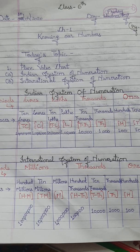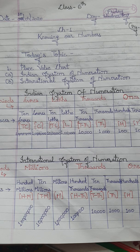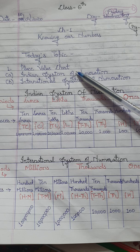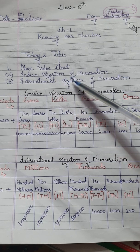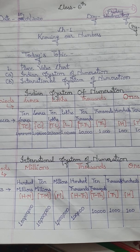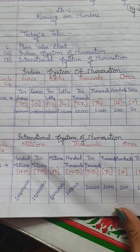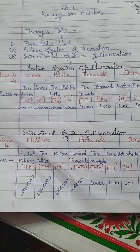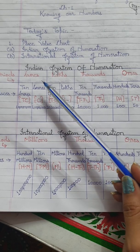Good morning students. Welcome to your maths class. Today I am teaching you about the very first chapter of the class 6th book, that is Chapter 1: Knowing Our Numbers. The very first topic we will cover today is the place value chart. This chart is of two types: one according to the Indian system of numeration, and one according to the international system of numeration. You have already learned about these place value charts in class 5th, but I am explaining them again because your very first exercise will be related to place value charts.